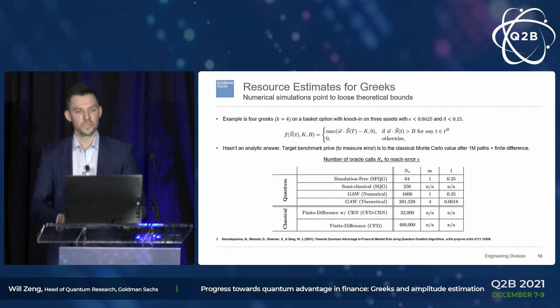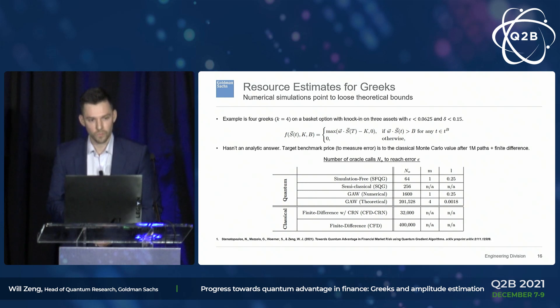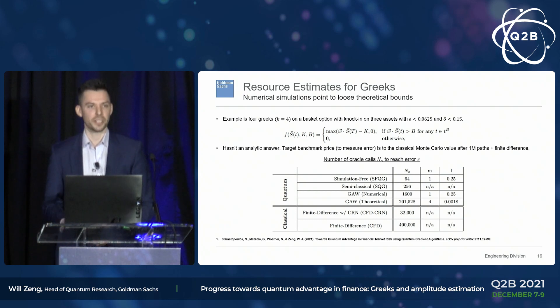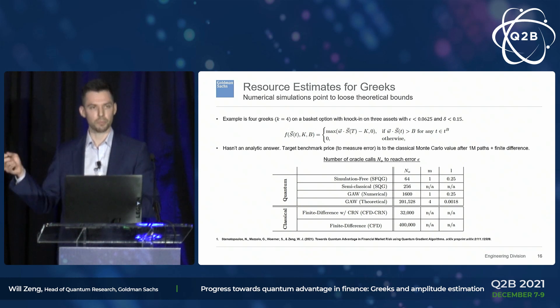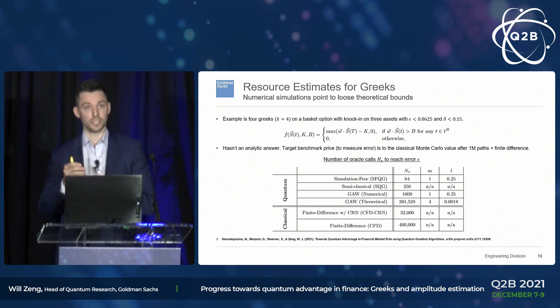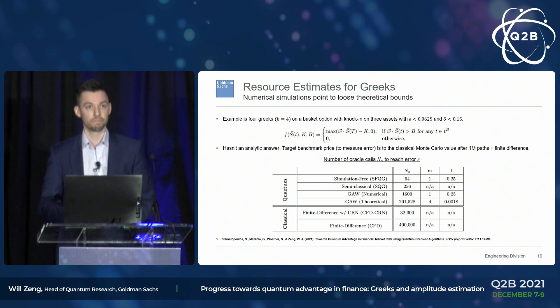A question from the audience: is there a particular reason for choosing the error to be less than 0.0625 and the failure probability to be less than 0.15? No special reason — we just needed some example, it's order of magnitude. In practice, you're not calculating Greeks to 10 to the minus 7 accuracy. If you set epsilon much smaller, the quantum algorithms show much more advantage because they scale better with that, but this is roughly the accuracy people are looking for.